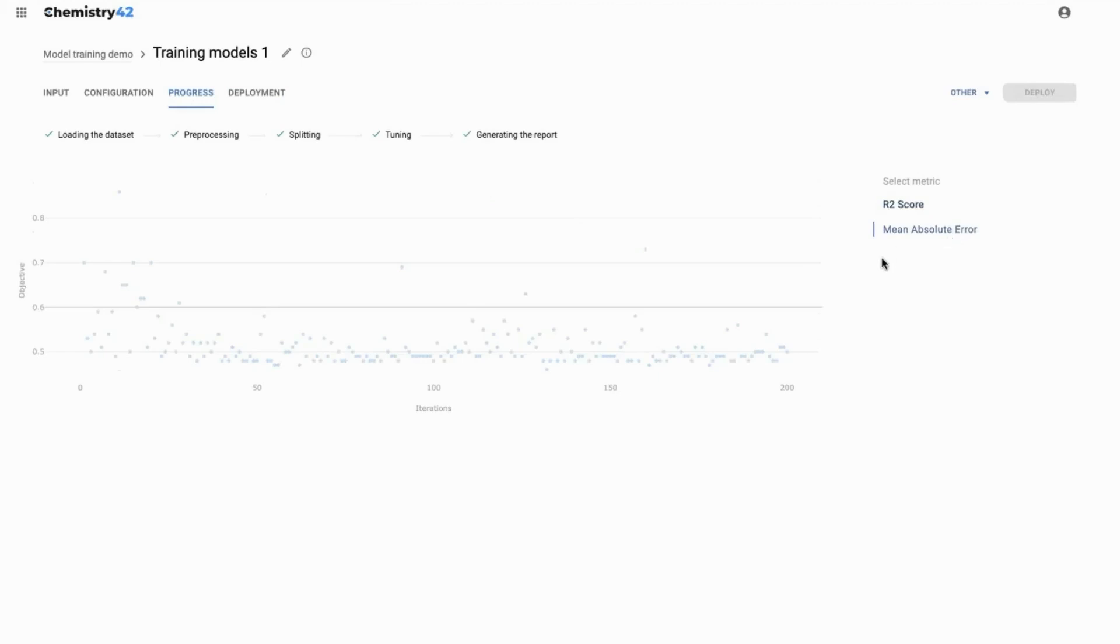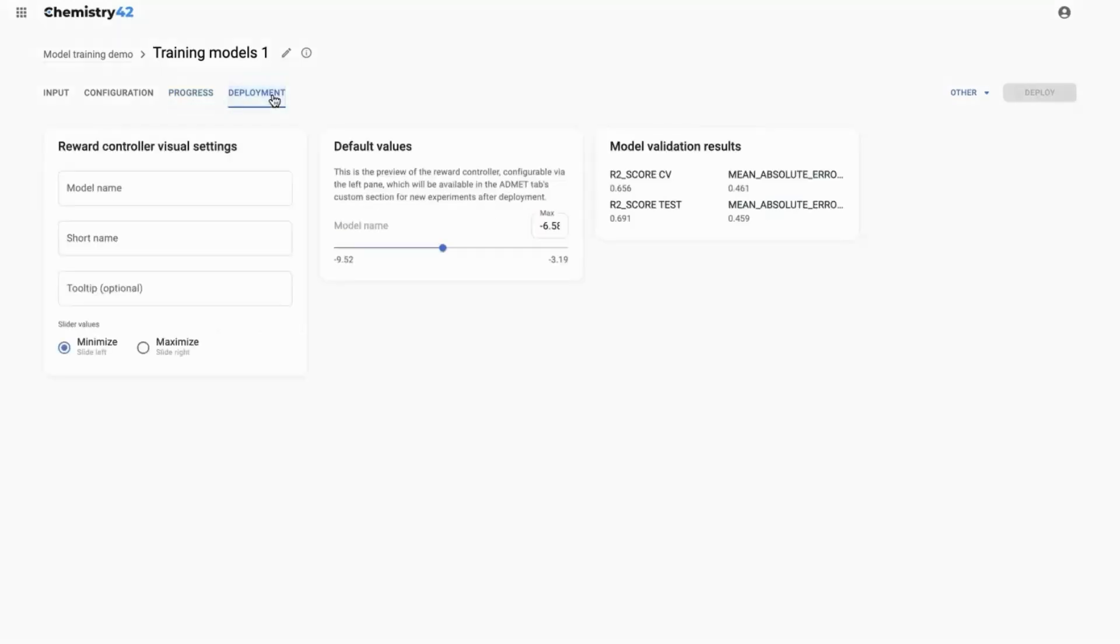Now, into the deploy tab, you need to input the name and short name of your model, as well as tooltip if needed, and then choose the direction of the slider in case of regression model and default value.